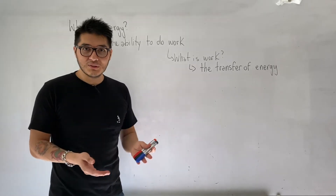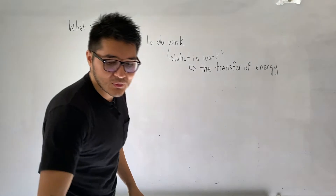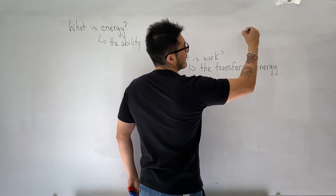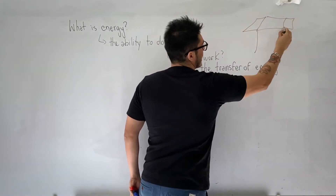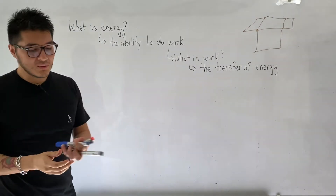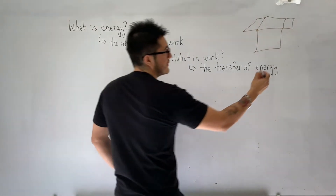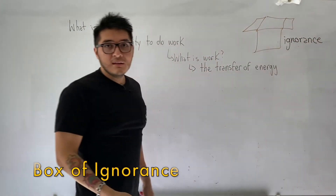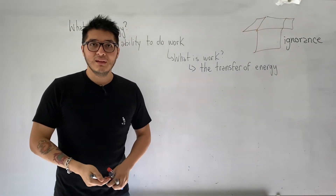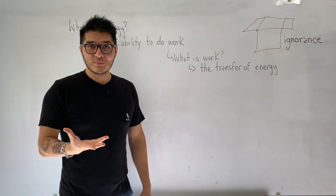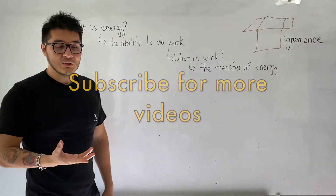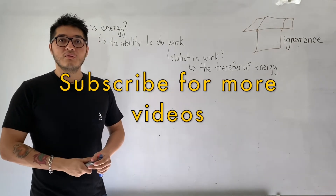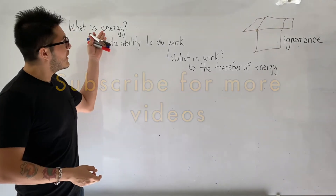So this should be confusing — we defined energy as the ability to do work, but work is the transfer of energy. We've gone back in a circular loop, so technically you don't know what work is or what energy is. In physics, they do this quite a bit. What I like to think about it is that in physics we have a box called the box of ignorance. Many textbooks and videos won't be able to explain this to you, so my best attempt is to give you an analogy.